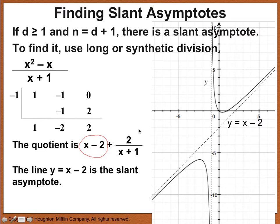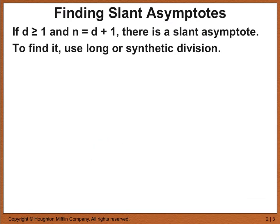I'm going to go through a couple more examples since you may have never seen slant asymptotes before — it helps to see more examples. So, repeating again for clarity: finding slant asymptotes requires d greater than or equal to 1 and n equals d plus 1. There's a slant asymptote, and to find it you use long or synthetic division.